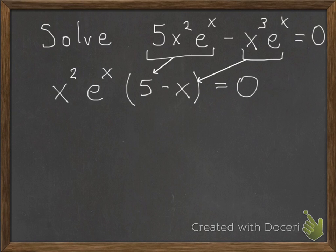So they both have at least an x squared, and they both have an e to the x. So you can factor that out, and then in parentheses here is what remains. So the first one, there's a 5 left over, and the second one, there's an x left over.